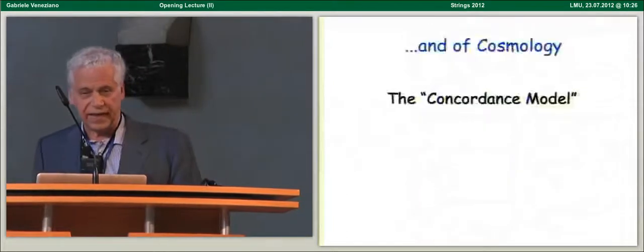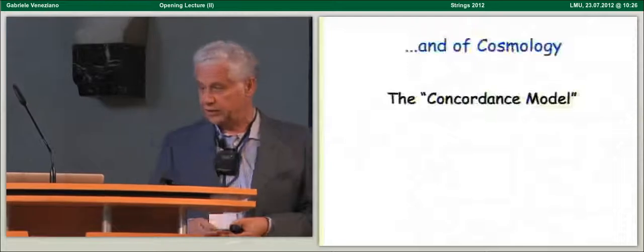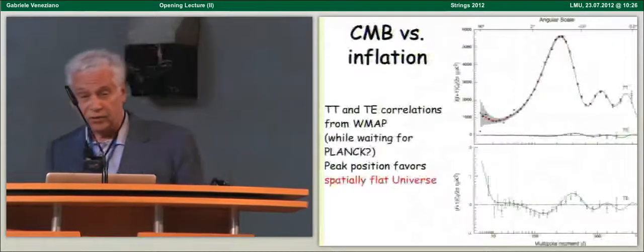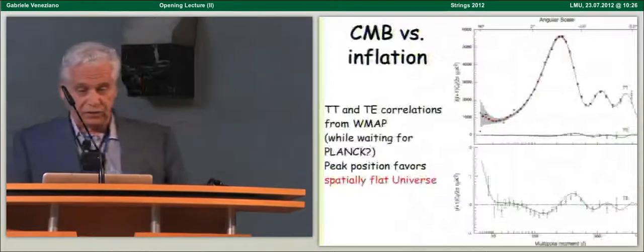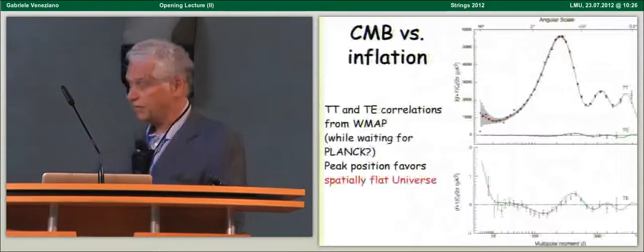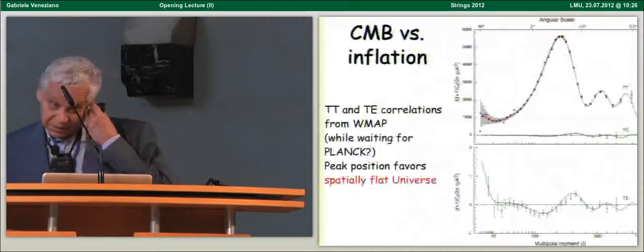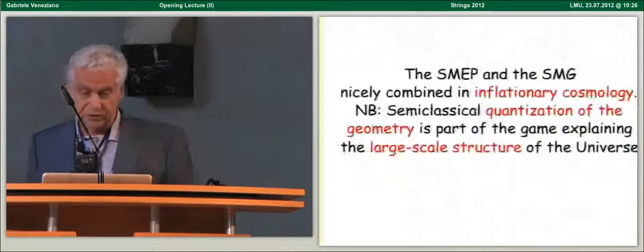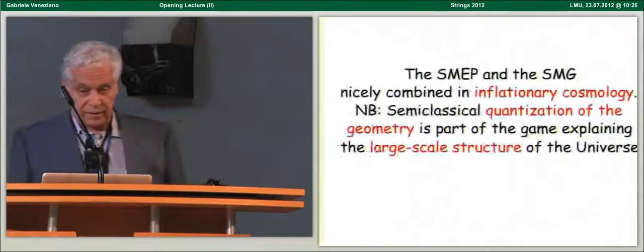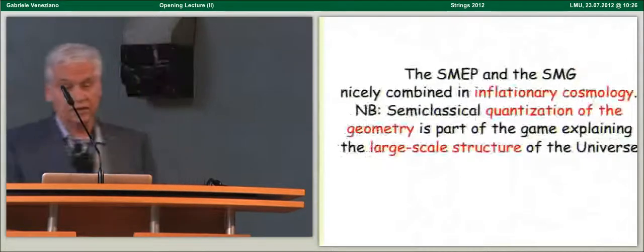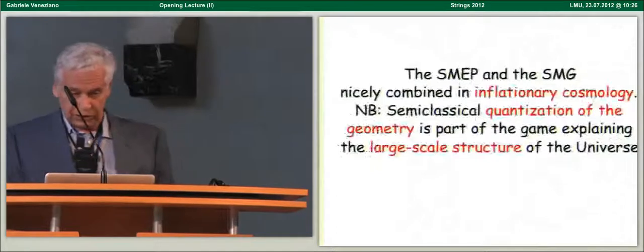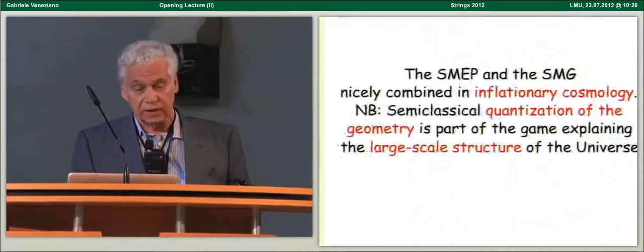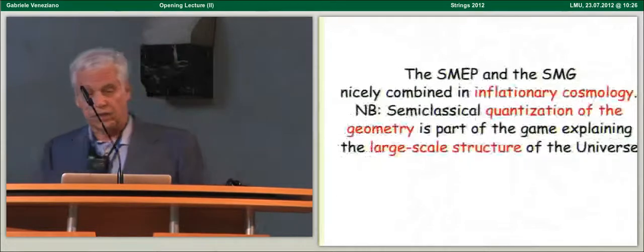Now, I want to emphasize that all these are tests of classical general relativity. We also have, by now, a standard model of cosmology, sometimes referred to as the Concordance model. I remind you of the way inflation fits through some parameters, of course, but fits beautifully the CMB data, and that the position of the peak favors especially flat universe. And I want to emphasize that the standard model of elementary particle and the one of gravity are nicely combined in inflationary cosmology.